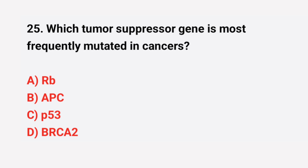Question number 25: Which tumor suppressor gene is most frequently mutated in cancers? The right answer is option C: P53.